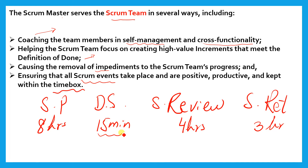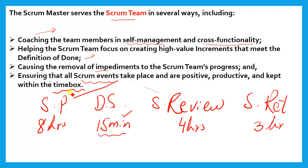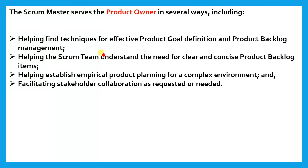If the sprint is for two weeks, these time boxes are less, but the daily Scrum remains 15 minutes regardless. Scrum Master ensures all Scrum events take place, that they are formal, and that they are positive, productive, and kept within the time box. The Scrum Master is responsible for this.